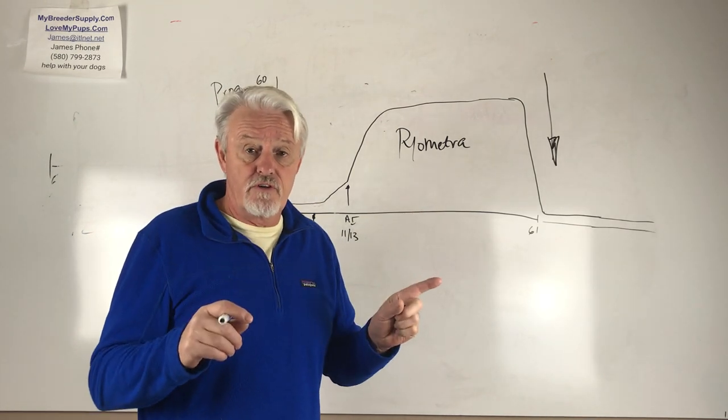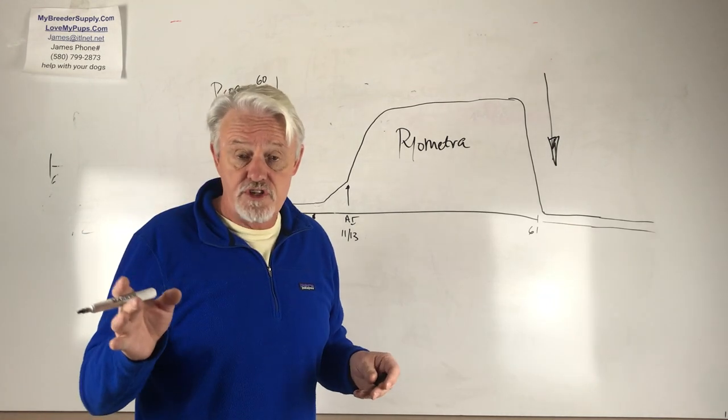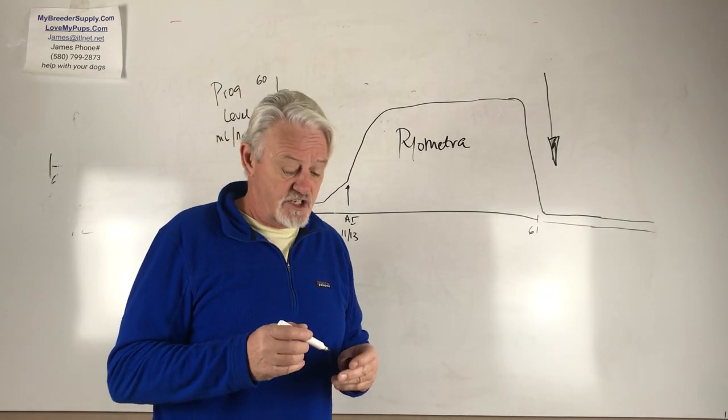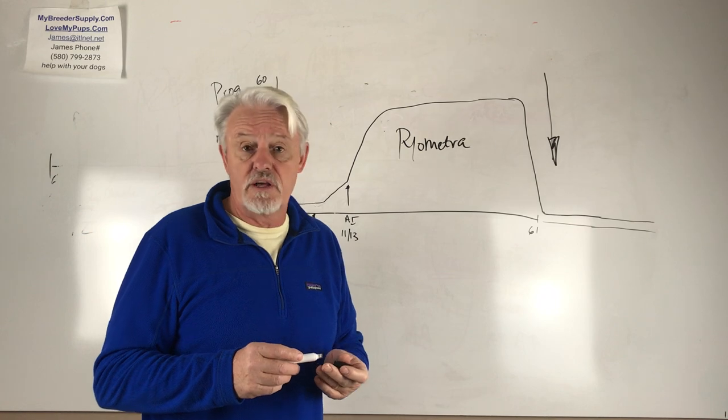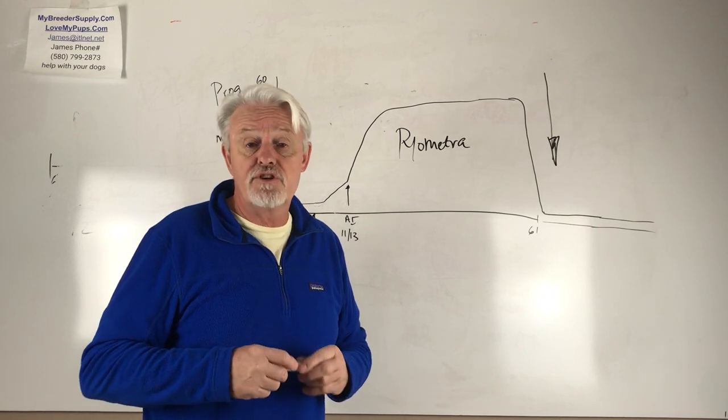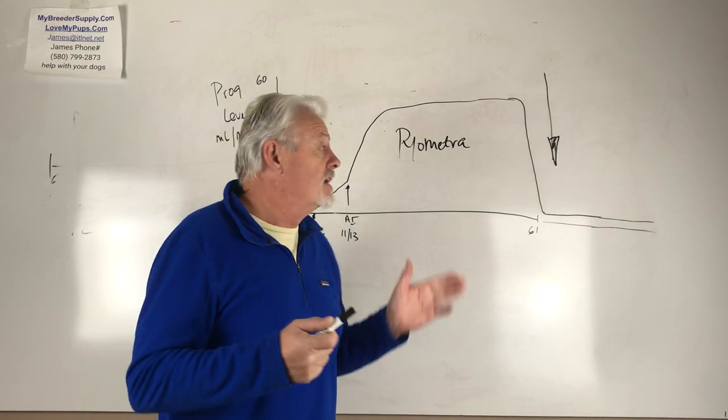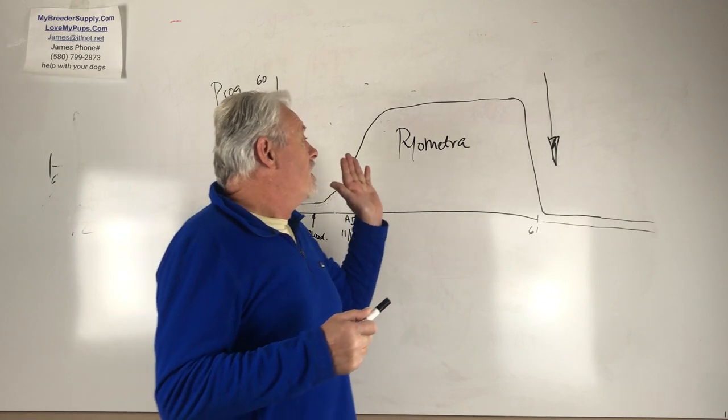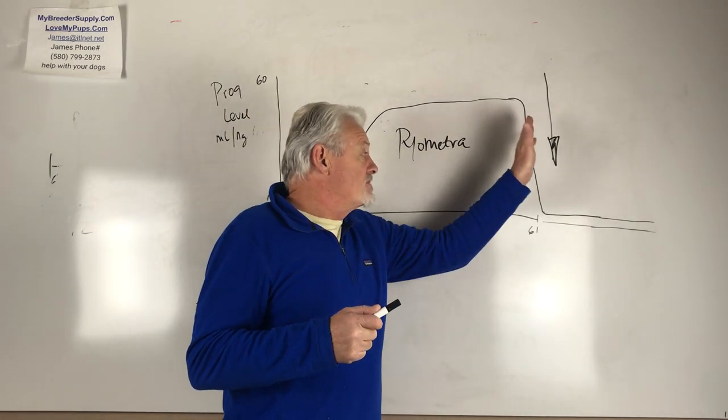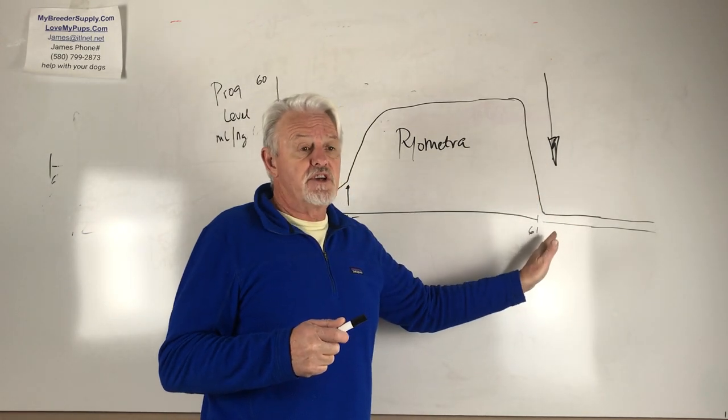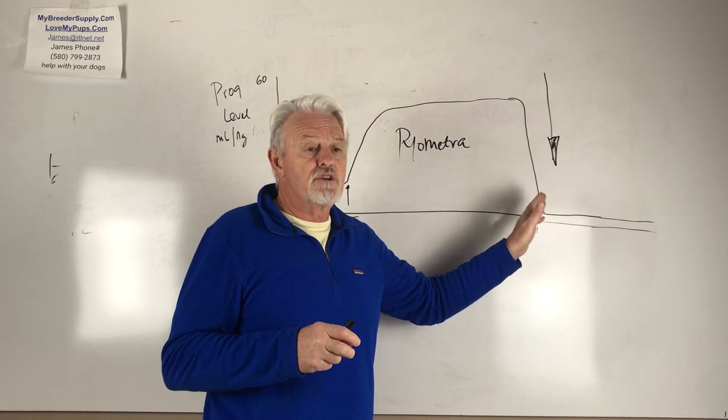Uterine cancer is the number two killer of dogs in general. Number one killer is skin tumors or cancers caused by skin cancers, but the number two in females is uterine cancer.